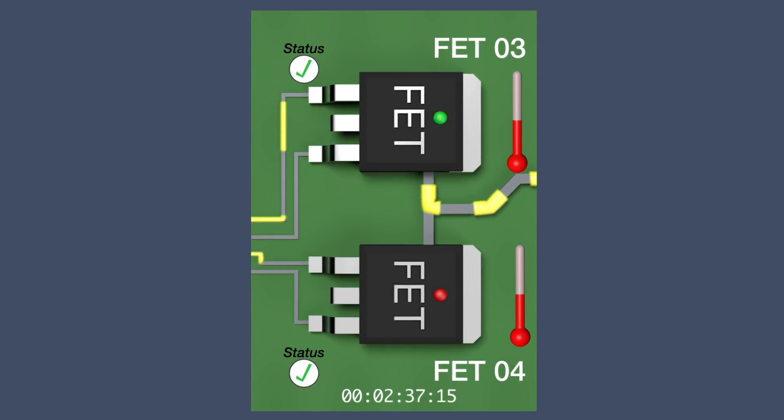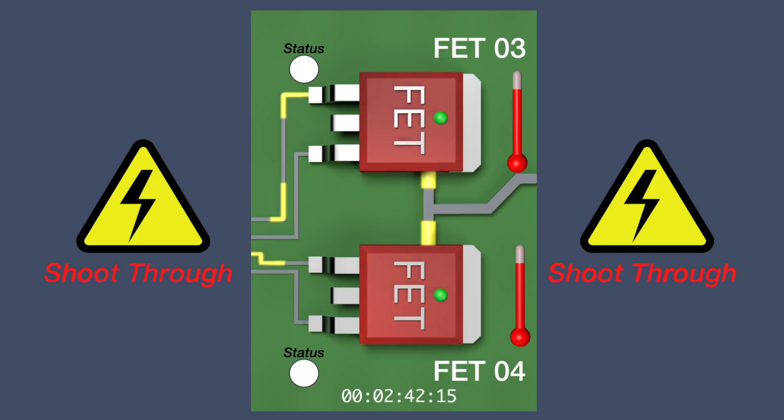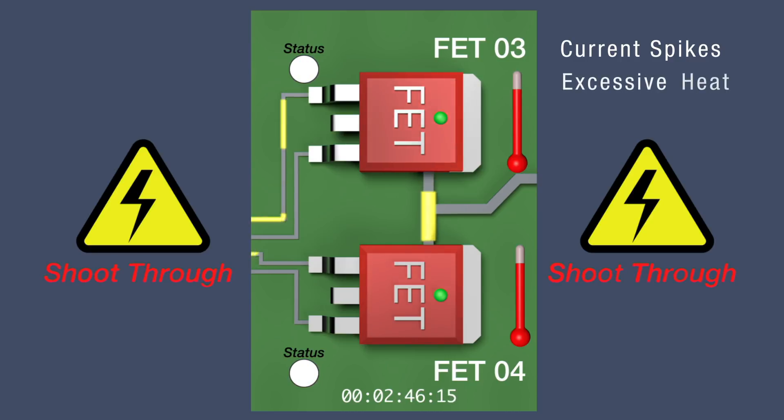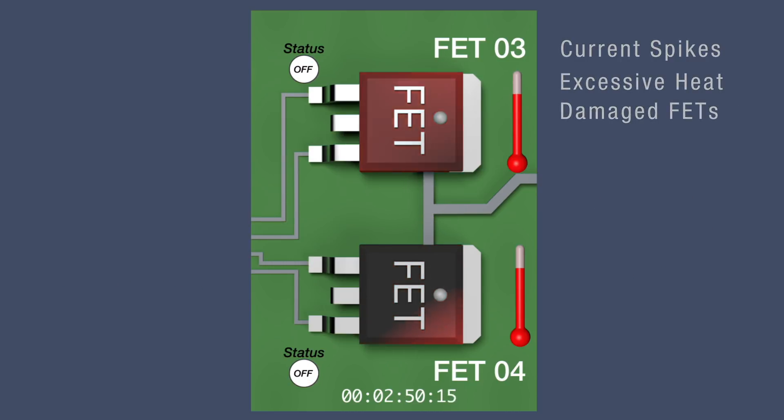For example, if a FET's switching transitions are not properly sequenced, a shoot-through condition can occur. This can cause high current spikes and excessive heat dissipation, potentially damaging the FETs.